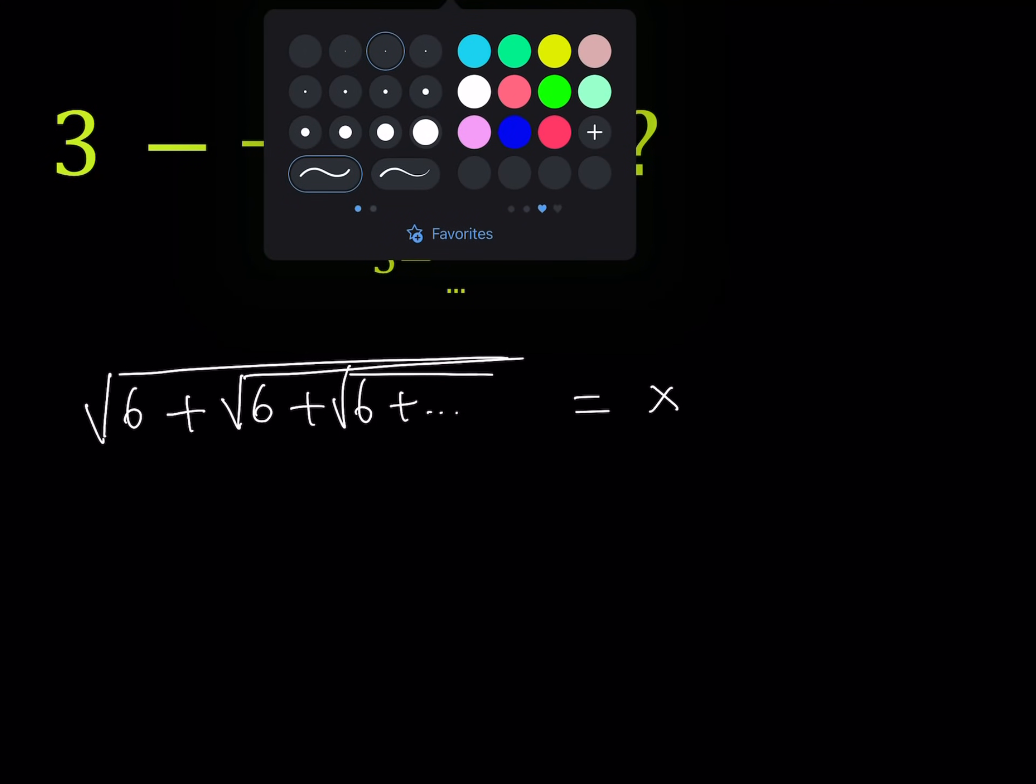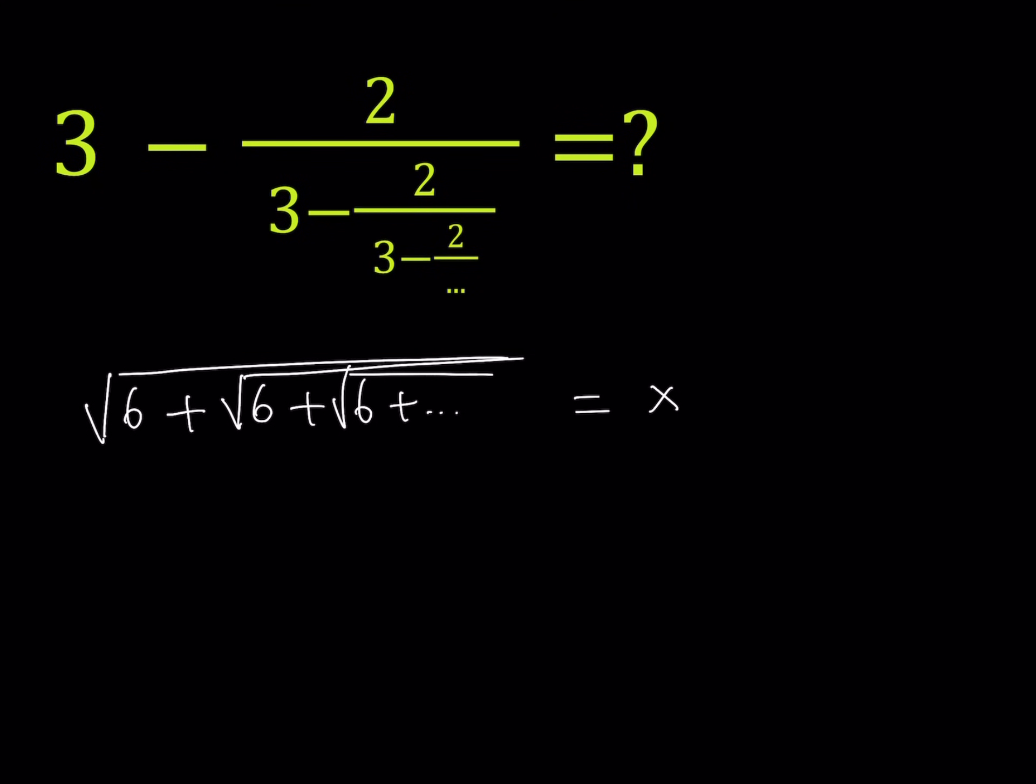So we can safely say that if the whole thing is called x, then this part here is also the same thing, which can be called x. So then we get something like this from here.